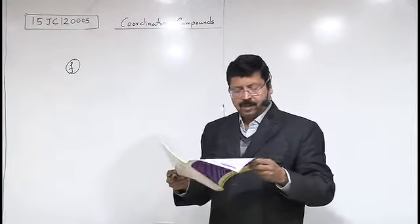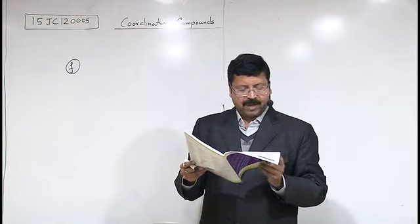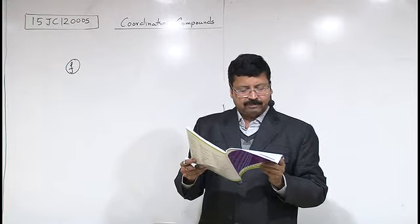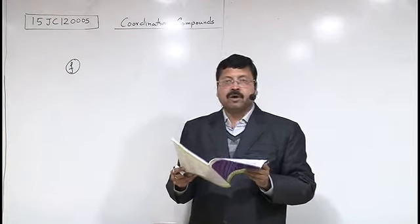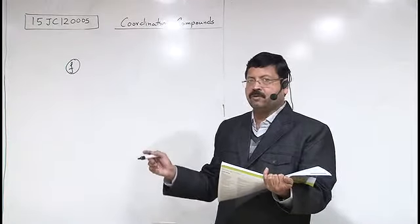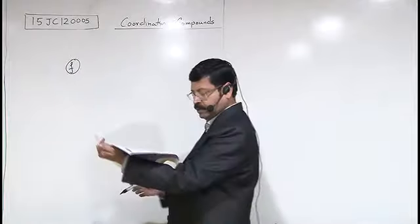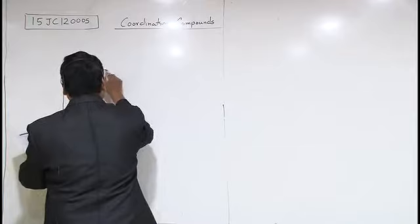In this, the name given is pentaamine dinitrogen ruthenium second chloride. Since pentaamine nitrogen is neutral ligand, obviously plus 2 charge is on the coordination sphere. In the ionic sphere, to balance that chlorine, so overall compound becomes neutral, zero charge, there should be 2 chlorines. From this, you design the formula.